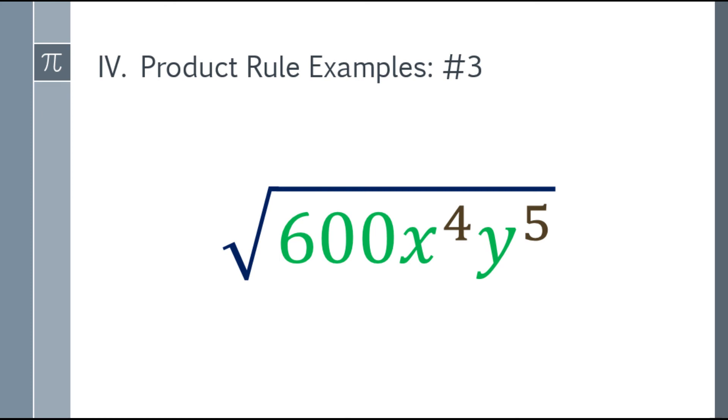Product rule example number 3. The square root of 600 x to the 4th y to the 5th. Okay. Sipin muna natin ito. Kung yung 600, kunin natin yung factors na may perfect square.